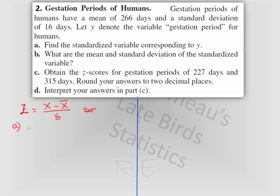If y stands for gestation period, then the z-score for y will be y minus the mean which is 266 divided by 16 which represents the standard deviation.